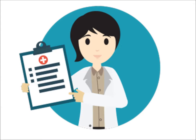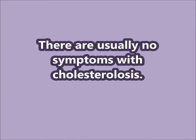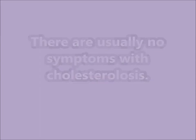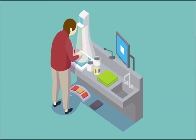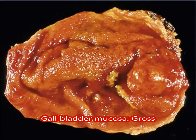Clinically, there are usually no special symptoms associated with cholesterolosis. Grossly, on naked eye inspection when the specimen comes in the lab, it shows a yellowish speckled appearance like a strawberry surface. You can compare this with the normal inside mucosa of the gallbladder.